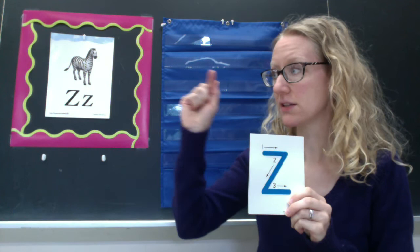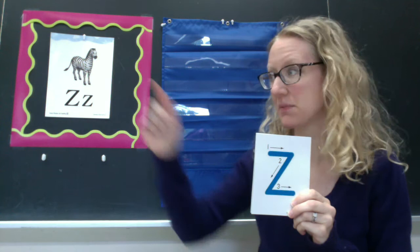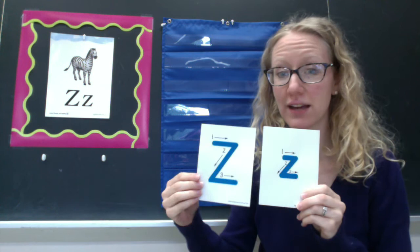Ready? Make a small line to the right, slant down to the bottom, another small line to the right. Let's do it one more time. Small line, slant line, small line.